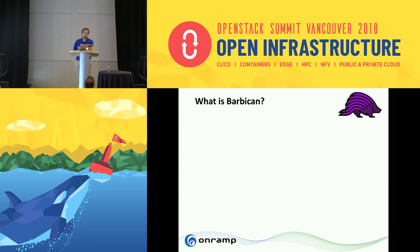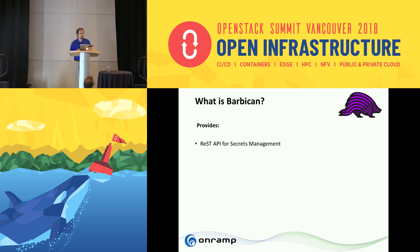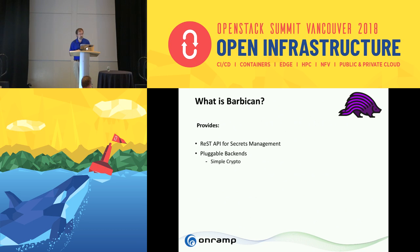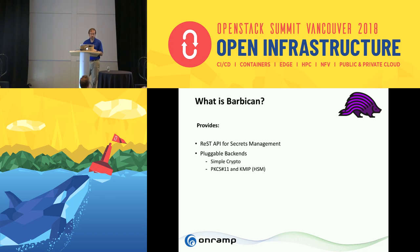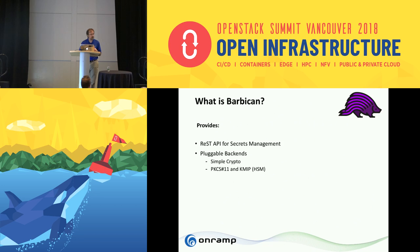What is Barbican? Barbican is an open source secret storage service written specifically for OpenStack, designed by developers at Rackspace and originally introduced with the Icehouse release. It provides a REST API for secrets management and has pluggable backends. Two notable backends: the Simple Crypto plugin, which stores your key encryption key directly within the Barbican configuration file, and HSM support — hardware security modules — supporting protocols including PKCS11 and the Key Manager over IP. If you need a tamper-proof device for storing your KEK, you can add an HSM to your setup.